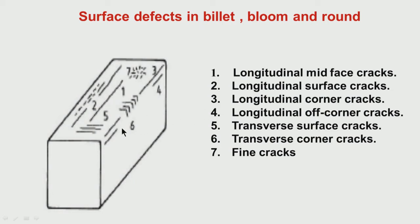Look at crack location 3: if there is a crack along the corner — this is a corner — the crack formation has taken place along the corner in the longitudinal direction, so we call it a longitudinal corner crack. Now look at crack 4: this is not exactly at the corner but slightly off from the corner. So we call it a longitudinal off-corner crack — the direction is longitudinal but the location is off-corner. Both this and the similar crack here are called longitudinal off-corner cracks.